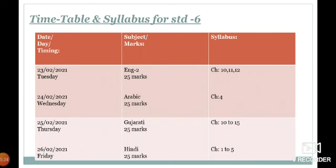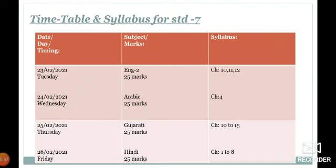Timetable and Syllabus for Standard 6th: 24 February, Wednesday, English 2, chapter number 10, 11, 12. Timetable and Syllabus for Standard 7th: 23 February, English 2, chapter number 10, 11, 12. Timetable and Syllabus for Standard 8th: 24 February, Wednesday, Arabic, chapter number 4. 25 February, Thursday, Gujarati, chapter number 10 to 15.